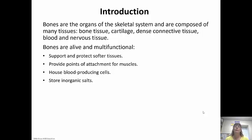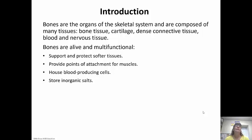Bones are the organs of the skeletal system, but they're made up of a lot of different tissues — and that's what most people don't think about. So it's not just bone tissue, but there's also cartilage on the ends of the bones, dense connective tissue, and blood and nervous tissue. So bones are actually alive.